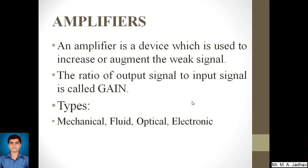What is an amplifier? An amplifier is a device which is used to increase or augment a weak signal. The ratio of output signal to input signal is called the gain, and it must be very high so that we can get a good signal. Different types of amplifiers can be used — there are mechanical amplifiers, feed amplifiers, optical, and electronics. For example, mechanical amplifiers use levers to get higher displacements and gear trains to get higher rotational speeds.